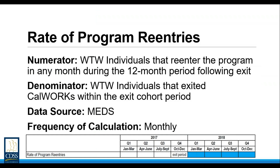Now we'll take a look at the rate of program re-entries. In this measure we want to find out who returns to CalWORKs within 12 months after exiting. We'll be using MEDS data to calculate this on a monthly basis. Our denominator is all welfare-to-work individuals that exit CalWORKs in a given month. We get our numerator by seeing how many of those individuals re-enter CalWORKs in the 12-month period following the month of exit. For the first calculation, we looked at those that exited CalWORKs in October, November, and December 2017.